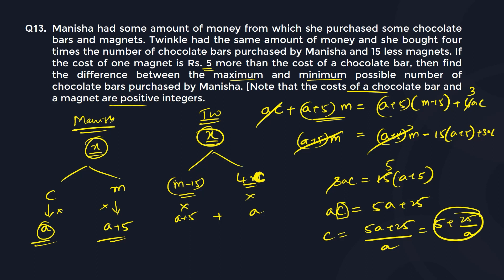C is maximum when a is minimum. Since the minimum positive integer is 1, c max equals 5 plus 25, which is 30. C is minimum when a is as high as possible — it can go up to 25, because beyond 25 the cost would become a fraction. At a equals 25, c min equals 1 plus 5, which is 6. The difference between 30 and 6 is 24, and that is your answer.